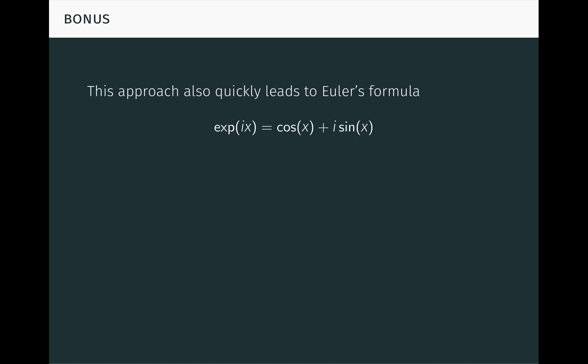As a bonus, this approach also quickly leads us to Euler's formula, e to the ix is equal to cosine x plus i sine x, and the famous identity, e to the i pi plus 1 is equal to 0, which relates 5 of the most important numbers in mathematics.